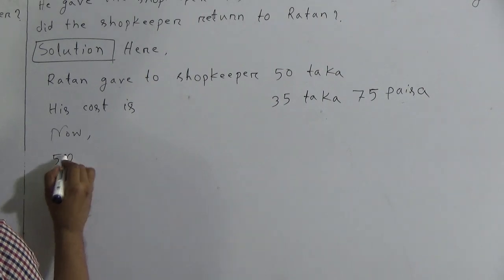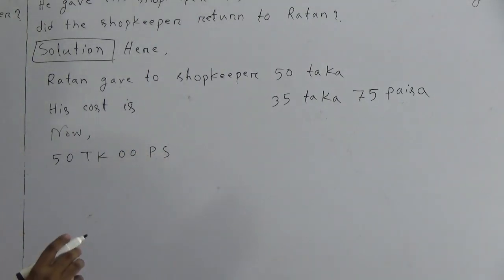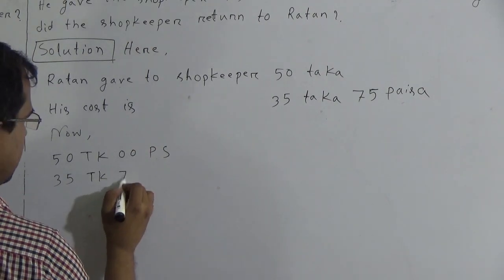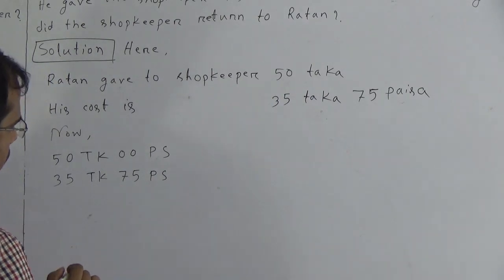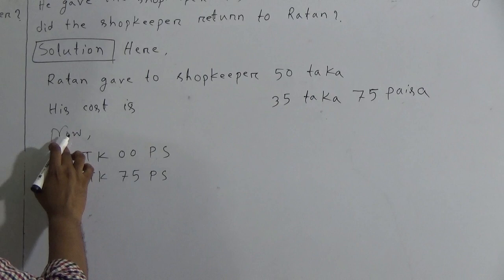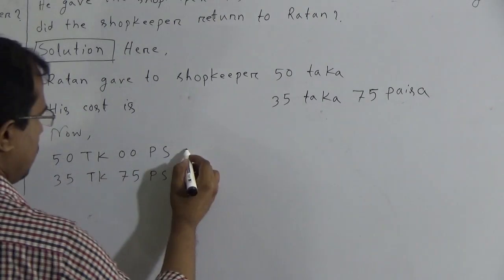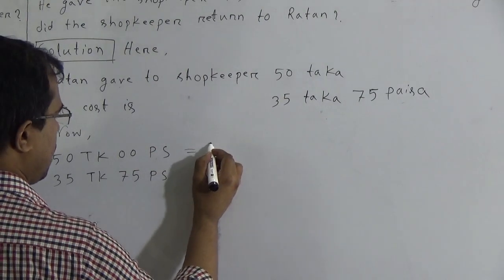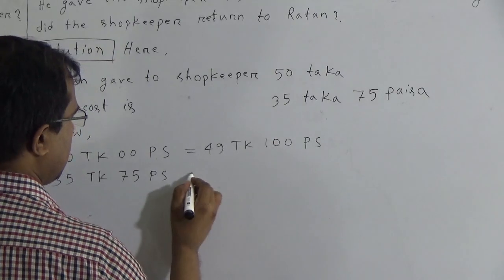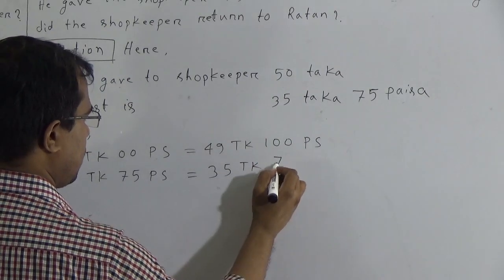We can write 50 Taka as 50 Taka 00 Paisa. We have to subtract 75 Paisa from 00 Paisa — it is not possible. So we take 1 Taka from 50 Taka; it becomes 49 Taka, and we add 100 Paisa to the Paisa part. So instead of 50 Taka 00 Paisa, we write 49 Taka 100 Paisa, and we subtract 35 Taka 75 Paisa.